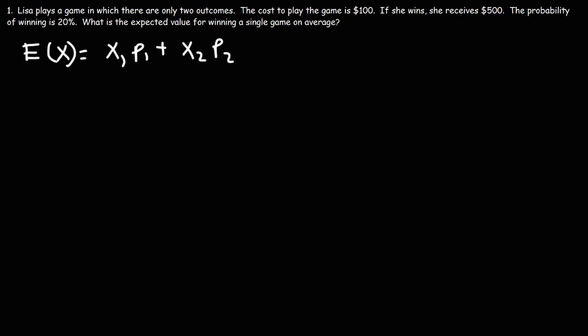So let's begin by organizing the data in this problem in a form of a table. So first we're going to write the outcomes. There's really only two outcomes that we need to be concerned with. Either she wins the game or she loses.